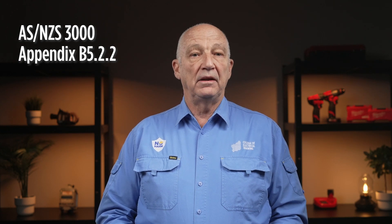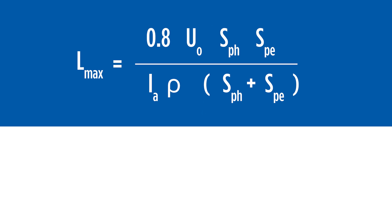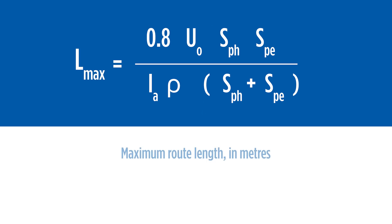One method of verifying the requirements of fault loop impedance is to use the calculation outlined in AS/NZS 3000 Appendix B5.2.2. This calculation will give maximum cable route lengths in metres for selected conductor sizes, conductor material, and circuit breaker instantaneous tripping current.